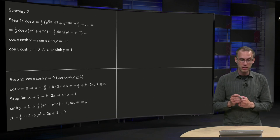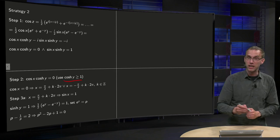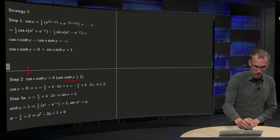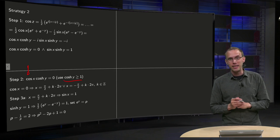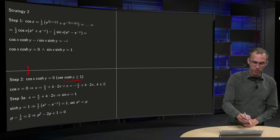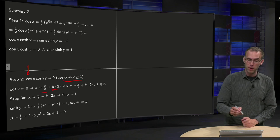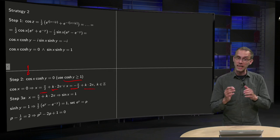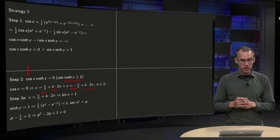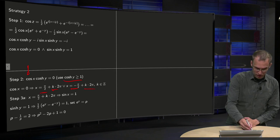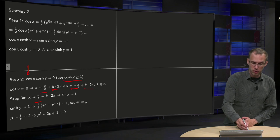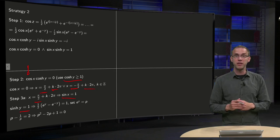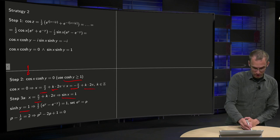That's easy to solve: x equals π/2 plus a multiple of 2π, or x equals minus π/2 plus a multiple of 2π, with k in ℤ. Taking the first case x equals π/2, we know sin(x) equals 1. Moving to the imaginary parts, we then need sinh(y) equals 1.